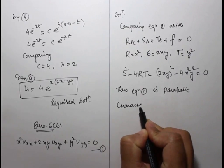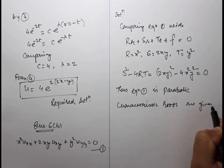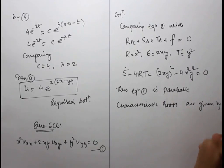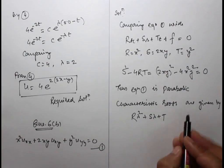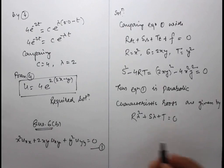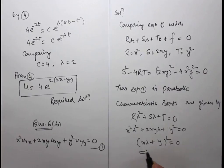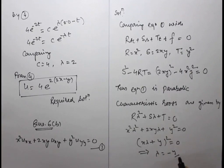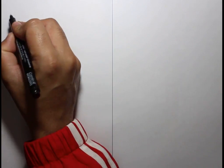The characteristic roots are given by Rλ² plus Sλ plus T equals 0, which gives the double root λ equals minus y/x.